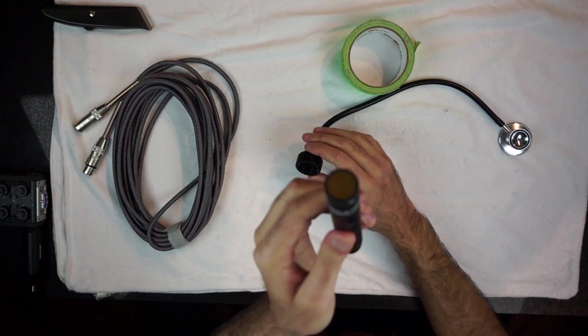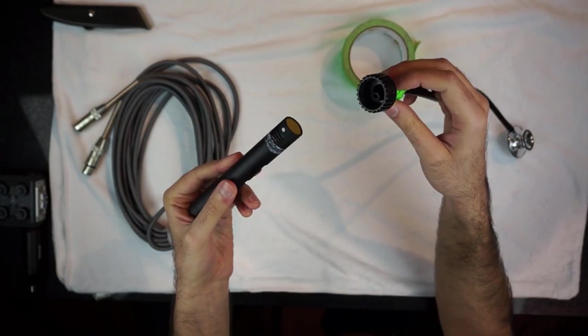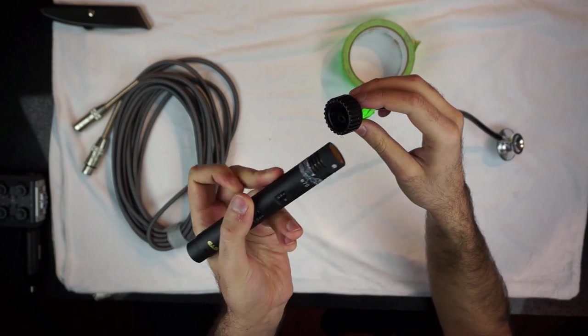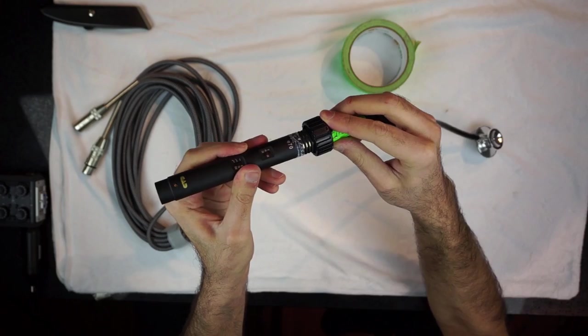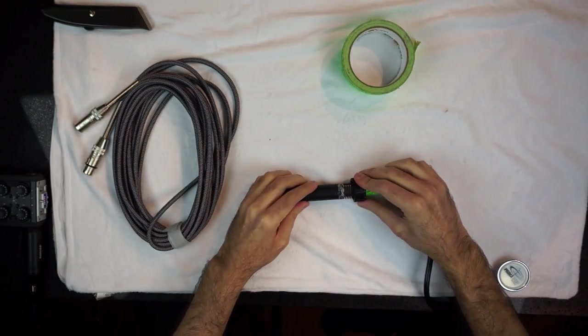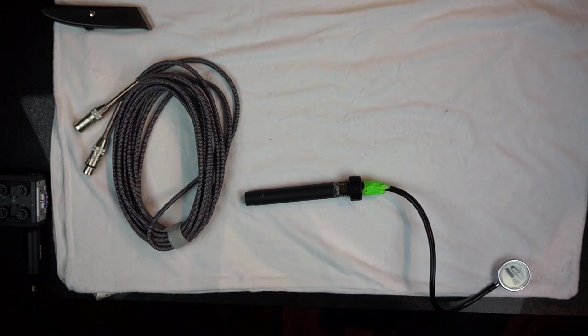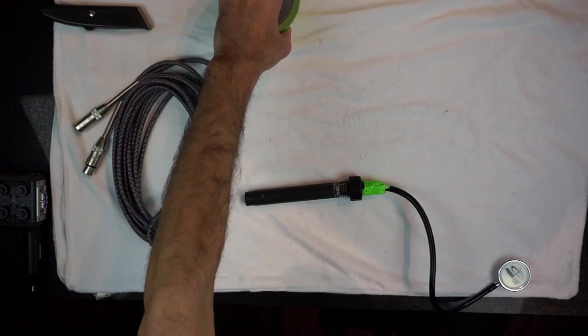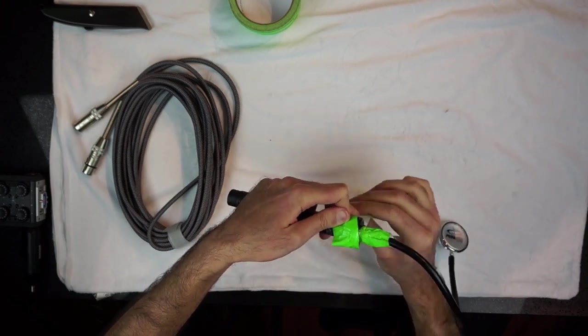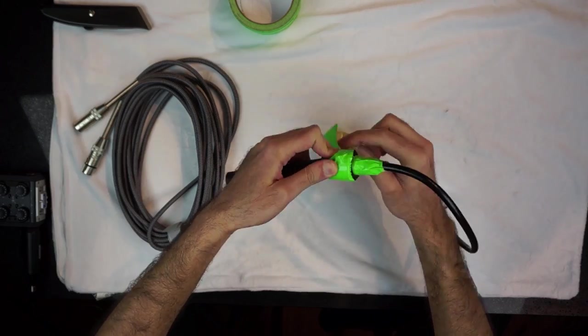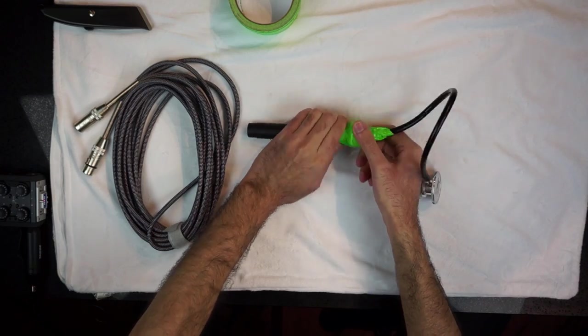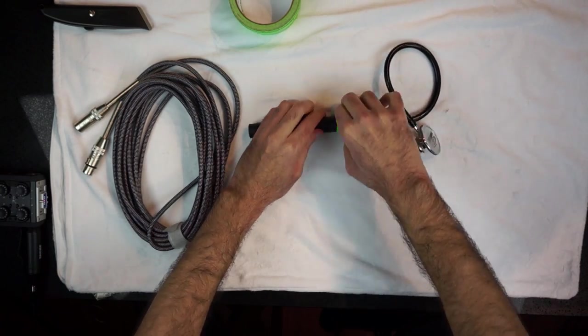So next up is to just take this small diaphragm condenser and do the exact same thing. And this is another reason I prefer using a cheap microphone, is because I'm putting tape all over it and abusing the heck out of it. So I'm just going to put this into this end hole here and then just tape that up.